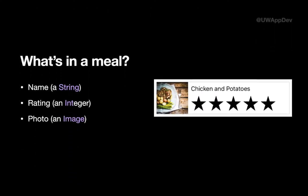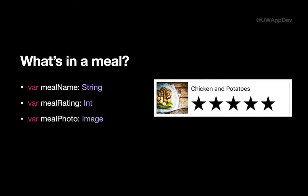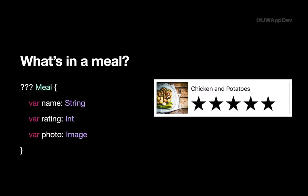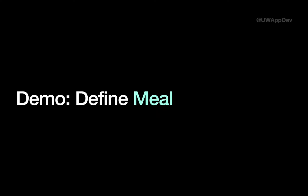Let's think about the concept of a meal first. For each meal, we'll have a name, a rating, and optionally a photo, so the user knows which meal they are talking about. Right now we're using three separate variables to represent these three properties of a meal: a meal name which is a string, a meal rating which is an integer, and in the future we're going to have a meal photo which is an image. However, a meal is really just a single entity. Is there a way to encapsulate all three variables into a single thing? That's what we're going to do today — define this meal entity and use it.